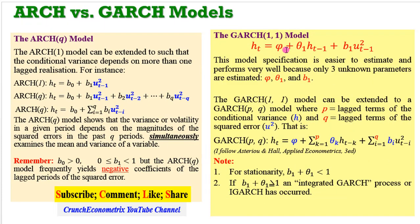In addition, the GARCH(1,1) model — as you can see on the screen — includes just one lag of the conditional variance and one lag of the squared error, which is why we call it a GARCH(1,1) model. It is easier to estimate and it performs very well because only three unknown parameters will be estimated: phi, theta, and beta. So this is a very simple and parsimonious model.